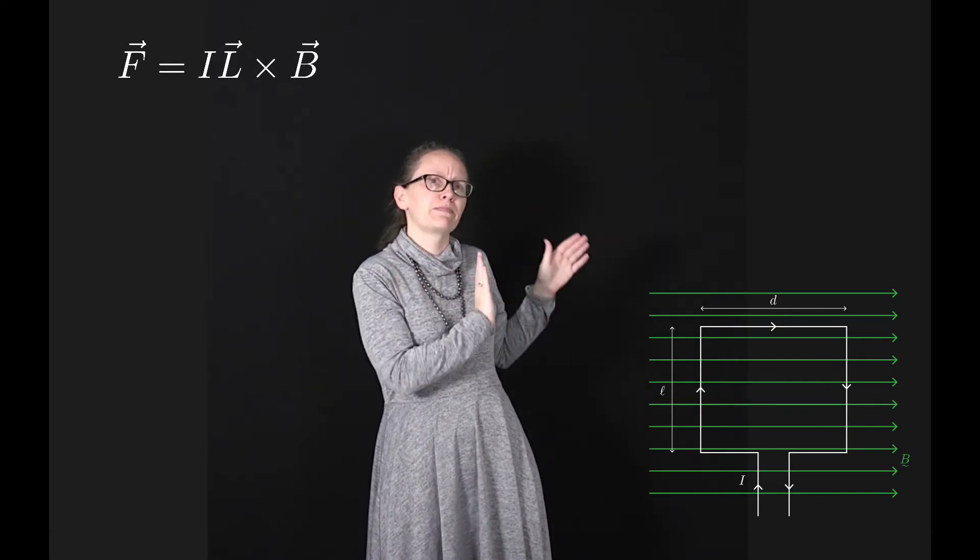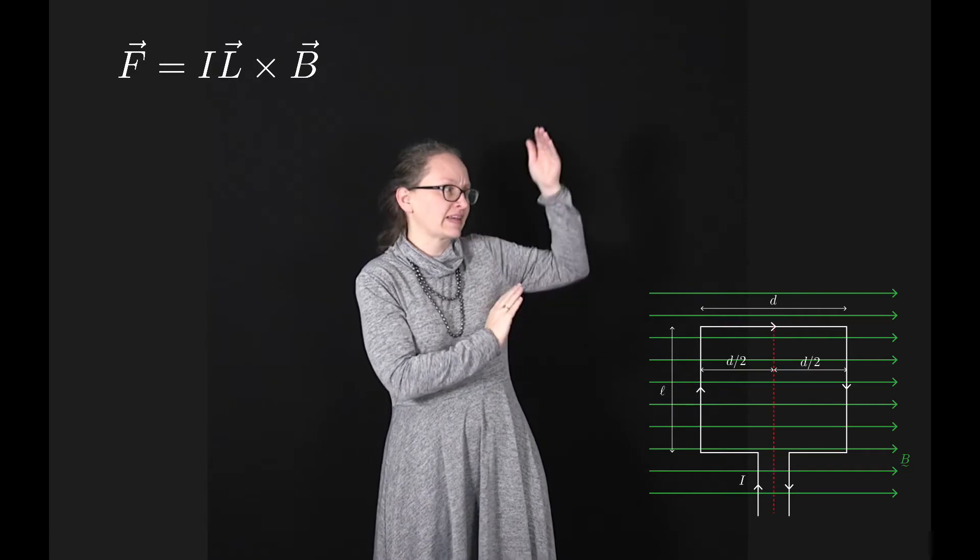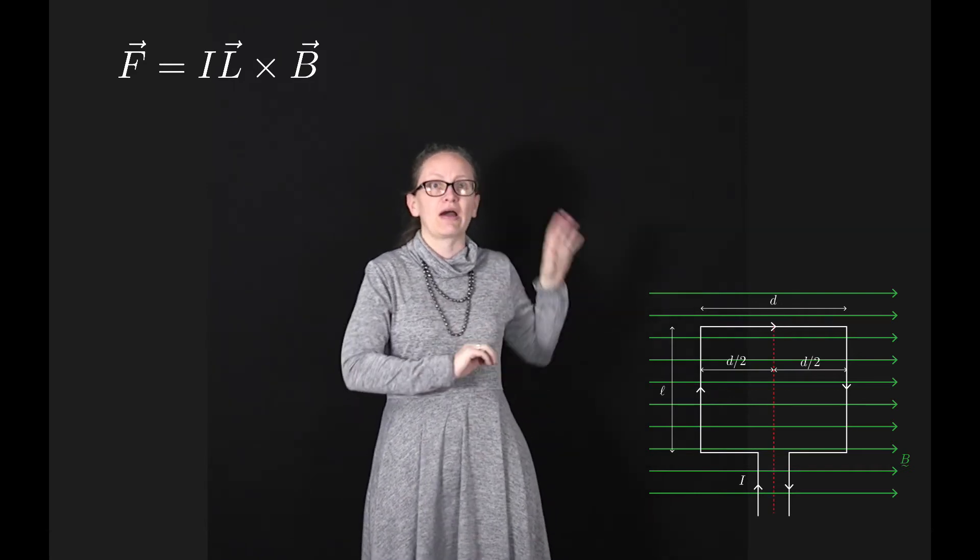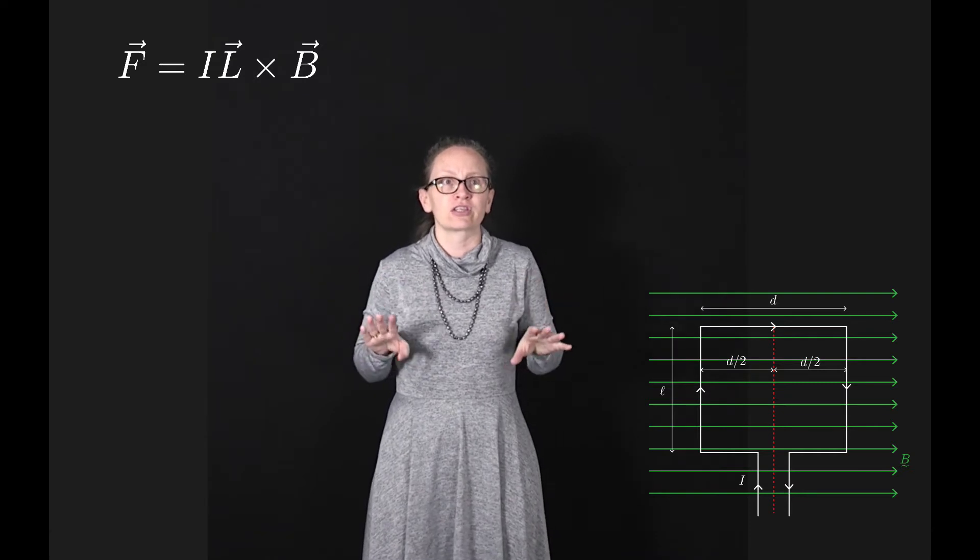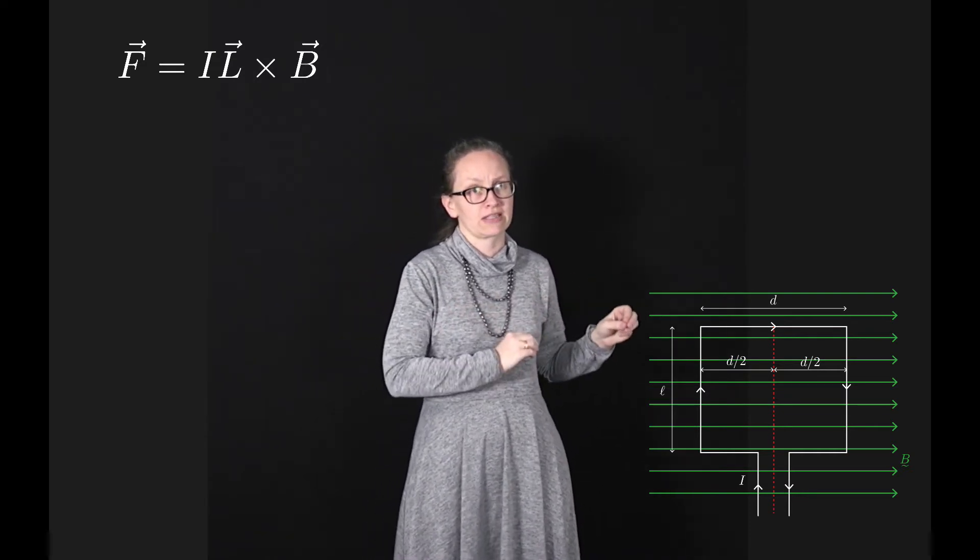We're going to pivot the loop about an axis down its middle as shown in the figure. Let's now calculate the force which each side of the loop experiences.